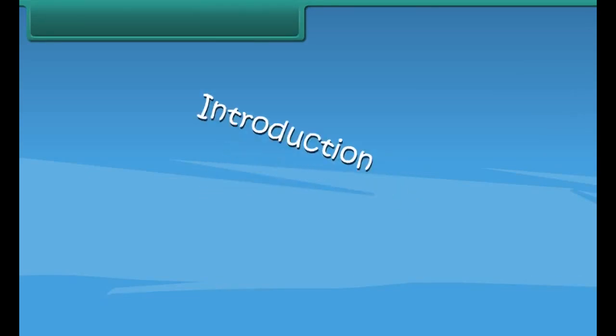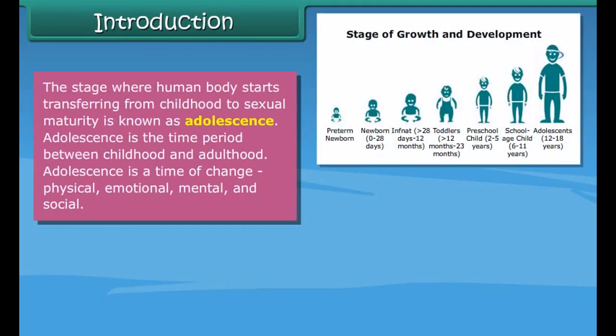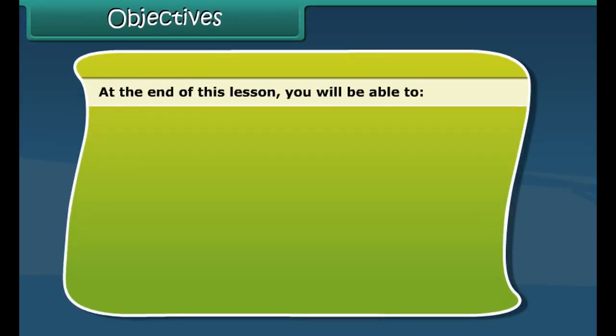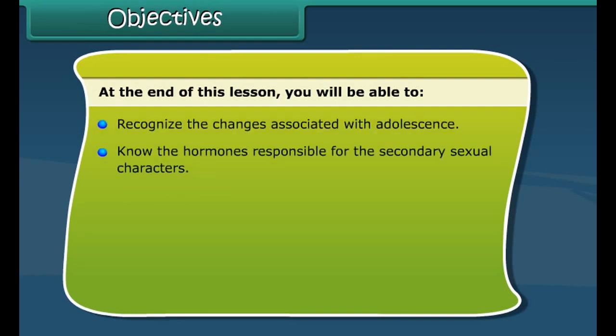Introduction: The stage where the human body starts transferring from childhood to sexual maturity is known as adolescence. Adolescence is the time period between childhood and adulthood — a time of change: physical, emotional, mental, and social. In this chapter, we will discuss the changes associated with adolescence, secondary sexual characters, sex determination in human beings, and reproductive health.